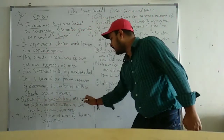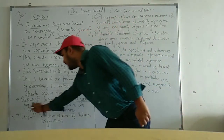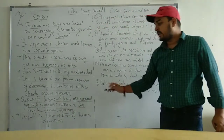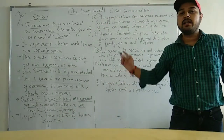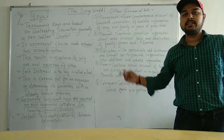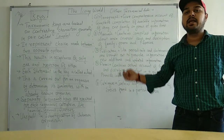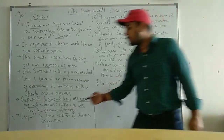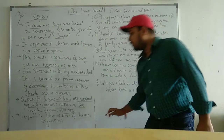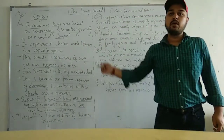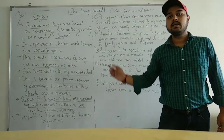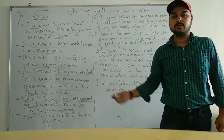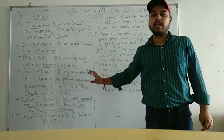Separate taxonomic keys are required for each taxonomic category, like family, genus, and species — and also for order and phylum. Taxonomical keys are useful in the identification of unknown organisms. We compare unknown organisms with known species using similarities to identify them.